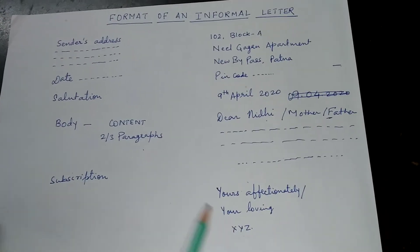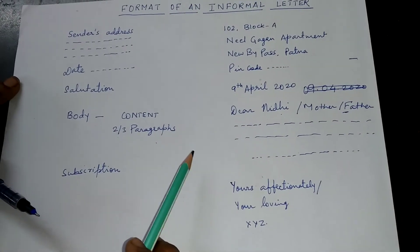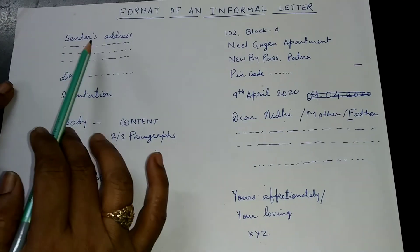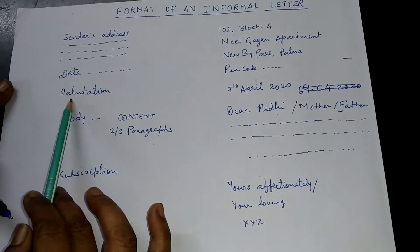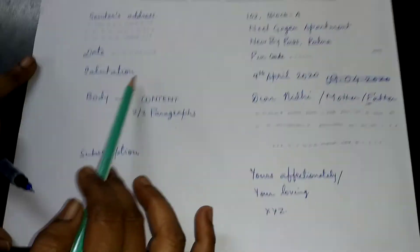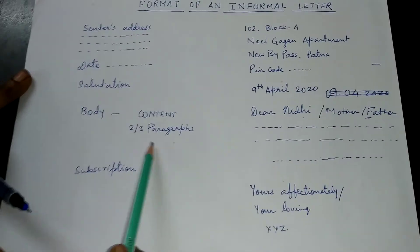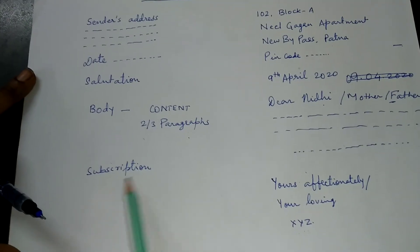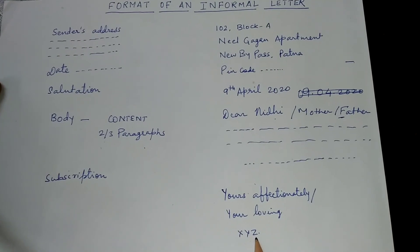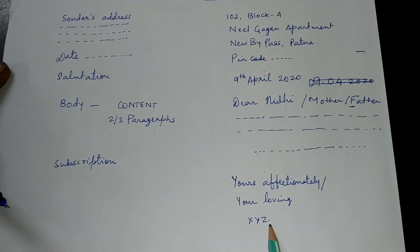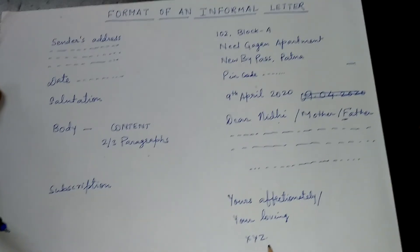Let me repeat the main parts of the format of an informal letter. First is the sender's address. Then you write the date. Then the salutation — Dear friend, Dear Mother, Dear Father, Dear Uncle, as given in the question. Then the main body part comes, with two or three paragraphs. And then the subscription — Yours affectionately, Your loving son, Your loving friend — followed by the name of the sender. Now try to write an informal letter. Thank you.